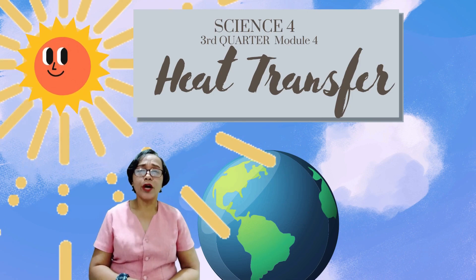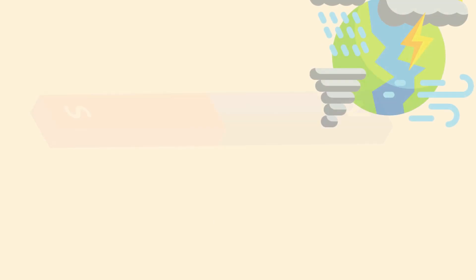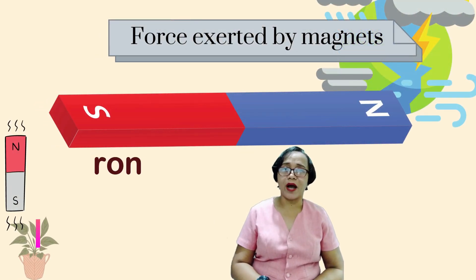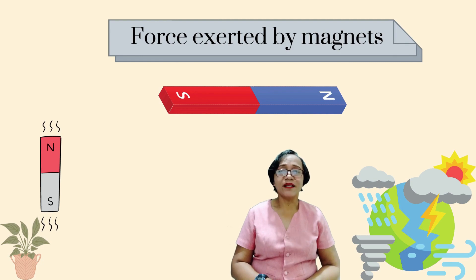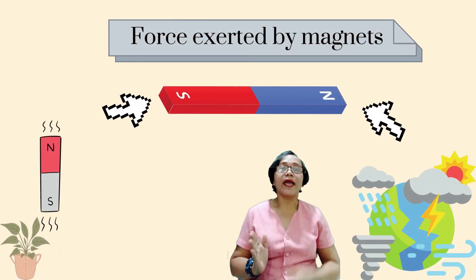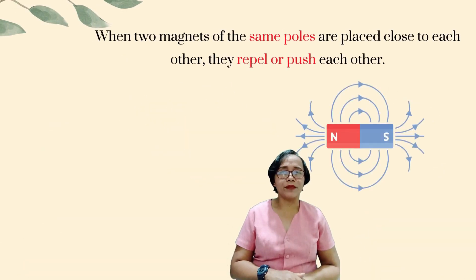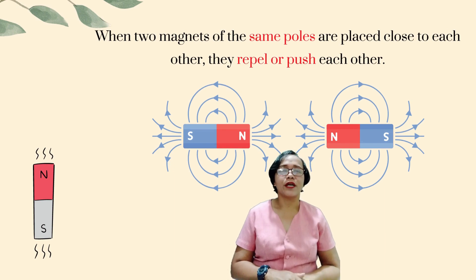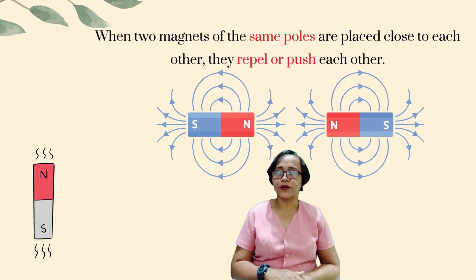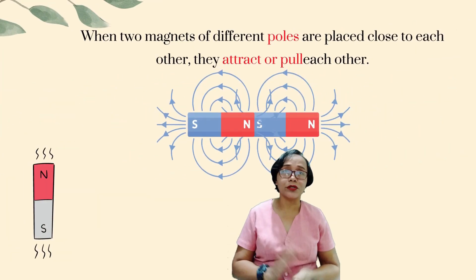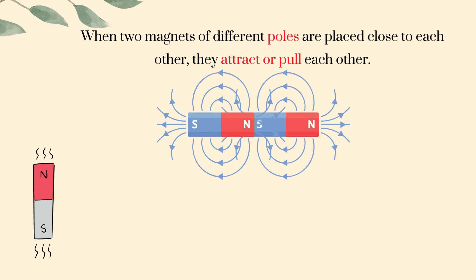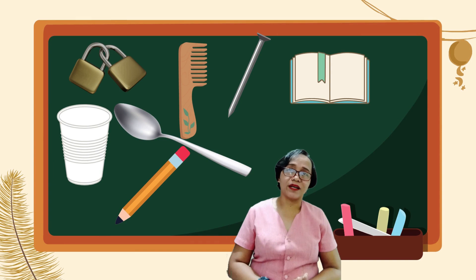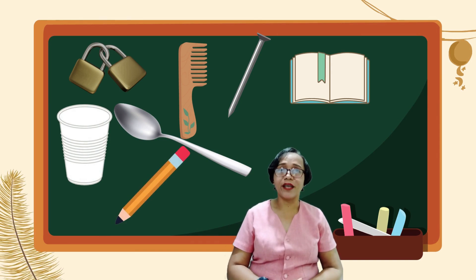In our previous lesson, you have learned the force exerted by magnets. Magnets exert a force of attraction on anything that is made of iron, nickel, and cobalt. You have also learned about magnetic force. Magnets have two poles: the north pole and the south pole. When two magnets of the same poles are placed close to each other, they repel or push each other. However, when two magnets of different poles are placed close to each other, they attract or pull each other. Some materials are attracted by magnets and some are not. Can you identify which of these objects are attracted or not attracted by magnets?